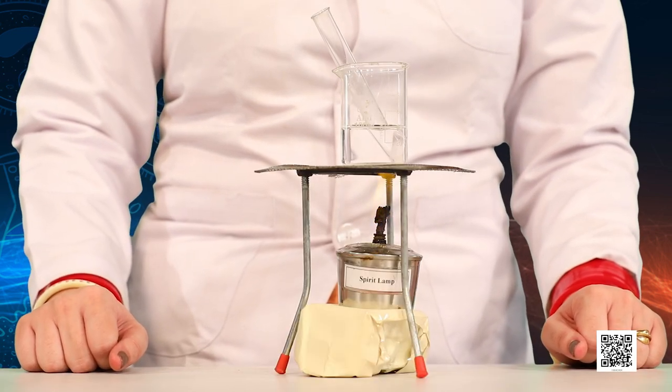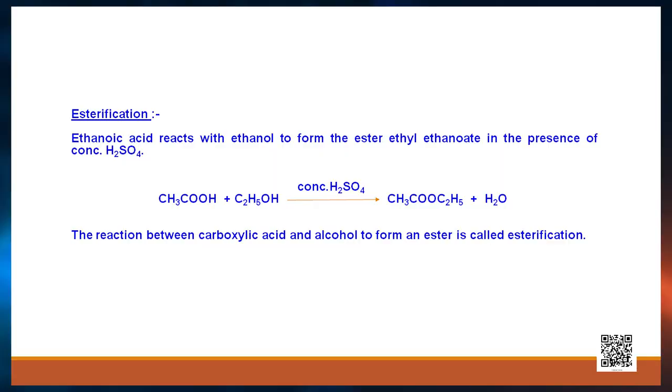Please have a look on the screen for the esterification reaction. Ethenoic acid (CH₃COOH) reacts with ethanol (C₂H₅OH); above the arrow you write concentrated sulfuric acid as the dehydrating agent. It removes water from both reactants to form the fruity-smelling compound ester, with formula CH₃COOC₂H₅, and water. The reaction between a carboxylic acid and an alcohol to form an ester is known as esterification reaction.